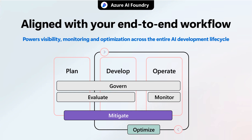Optimization serves as a feedback loop, turning operational insights back into development improvements. We begin with the crucial planning phase, where selecting the right models and evaluation metrics sets the foundation for smooth transition to prototyping and beyond.